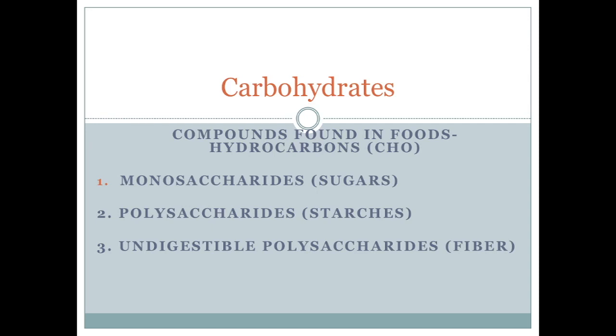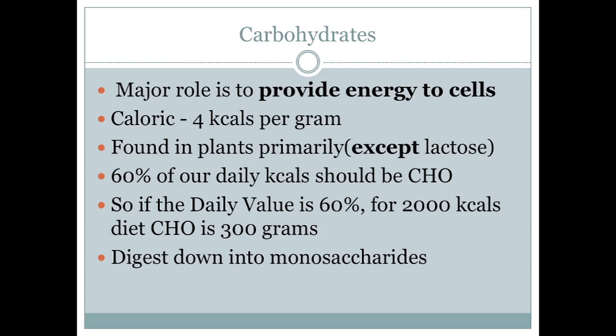Carbohydrates can be broken up into three groups: monosaccharides, which are sugars; polysaccharides, which are starches; and undigestible polysaccharides, which are known as fiber. The major role of carbohydrates is to provide energy to your cells, and they have four kilocalories per gram, as we've discussed previously.